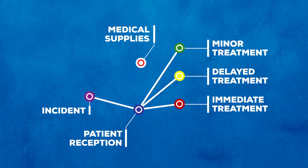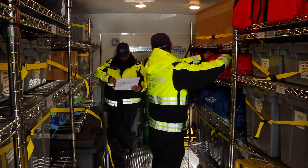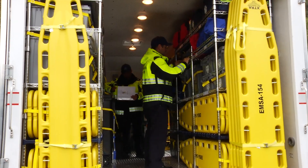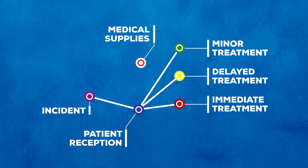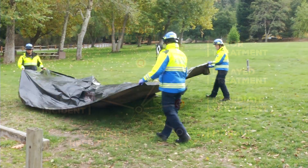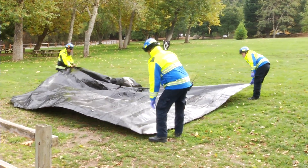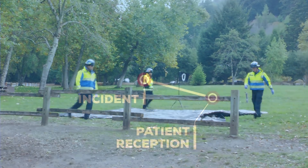The medical supply area is where supply caches are stored for use in treatment areas. As a treatment area gets low on supplies, the treatment unit leader can coordinate resupply as needed. This area does not need to be continuously staffed. The morgue area is for patients who have died in the field treatment site. To help keep living patients calm and cooperative, the morgue area should not be placed in view of the treatment and reception areas, and it also does not need to be continuously staffed.